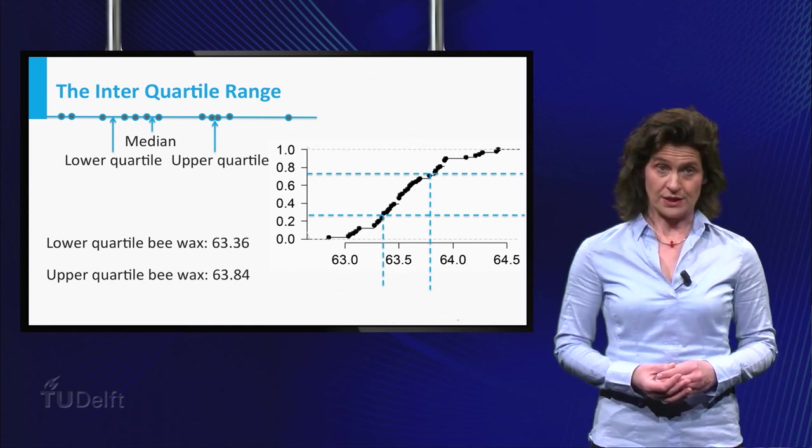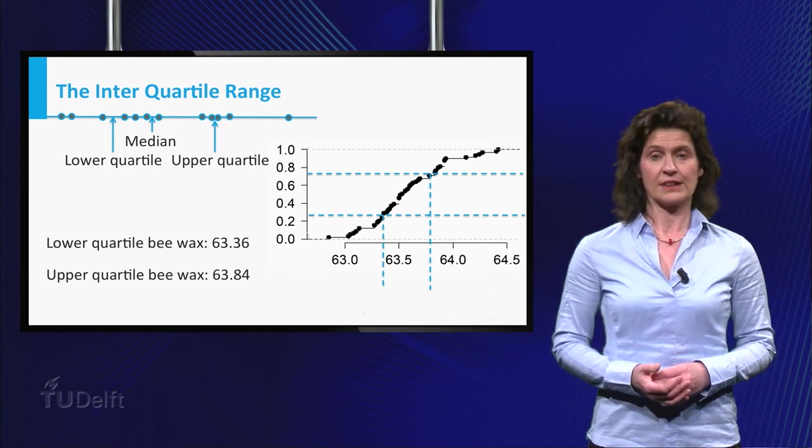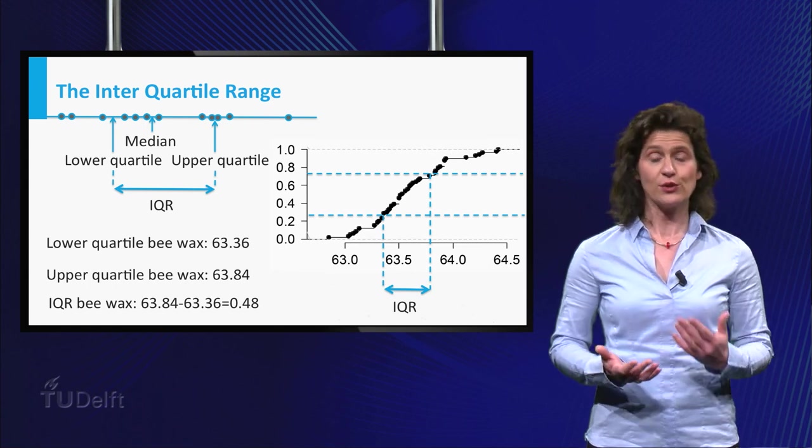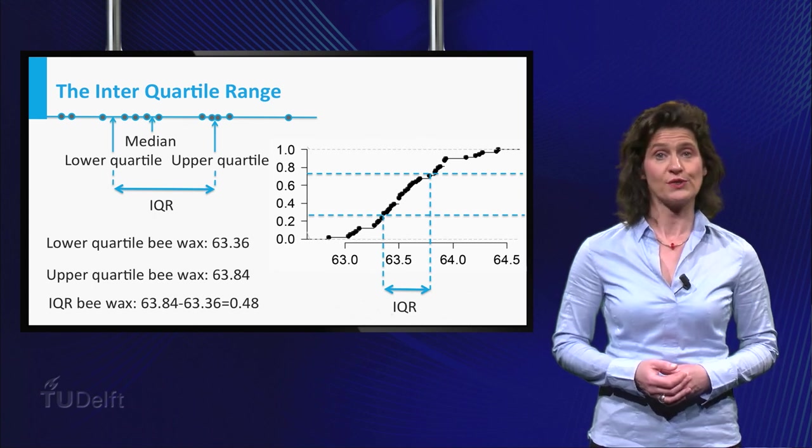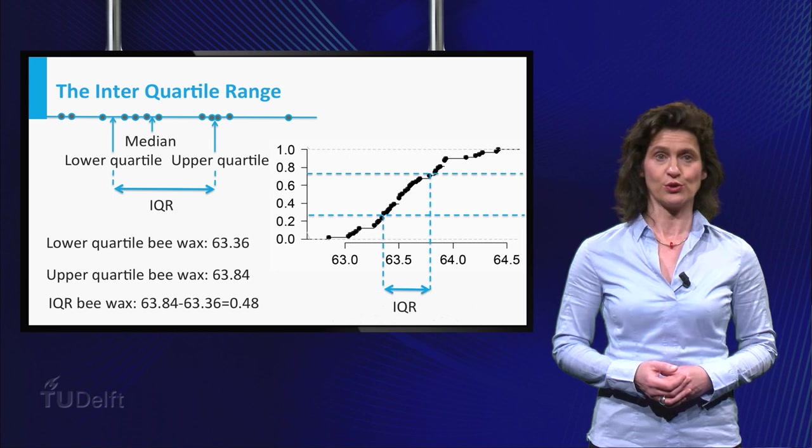Based on these quartiles, you can define a third measure of variation of the data, the interquartile range. This is the difference between the third and the first quartile. As you see, for the melting temperatures of natural b-wax, the interquartile range is equal to 0.48.